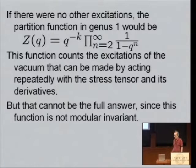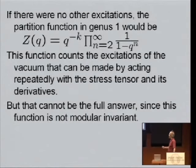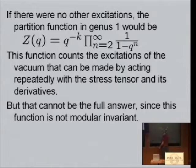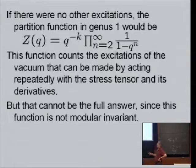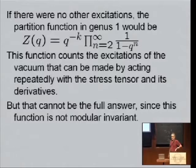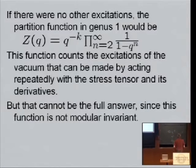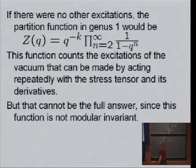Now, if there were no other excitations, the partition function in genus 1 would be this thing. The partition function is defined as the trace of Q to the H. So if the sum over all energy levels, let's say an energy level N, the number of levels of that energy times Q to the N. Q is taken to be less than 1 so that the sum converges. So the ground state had energy -K, so its contribution is Q to the -K. But according to Brown and Henneaux, there's a Virasoro algebra, and we can act on the ground state with the Virasoro generators. So we can make more general states, for example, L_{-2} to the A_2, acting on the ground state, or L_{-3} to the A_3 times L_{-2} to the A_2 acting on the ground state, and so on.